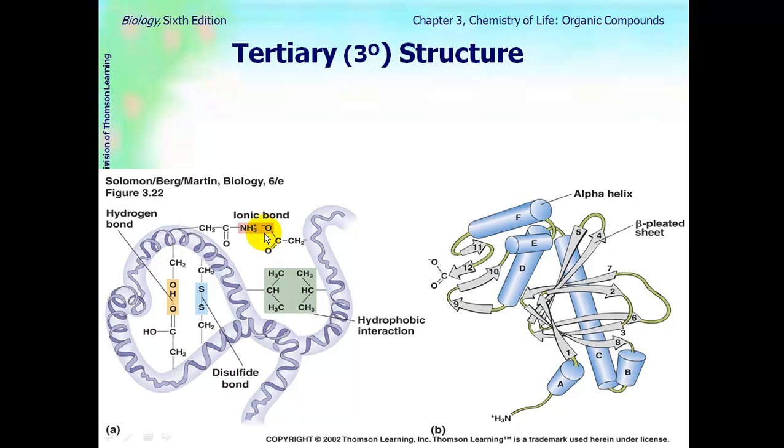Tertiary structure, you have more than different kinds of interactions occurring. You have ionic bonds occurring between positive and negative ions. You have hydrogen bonding still occurring. You have disulfide bonds, which are bonds between sulfur groups. And you have hydrophobic interactions, so you've got some repelling going on. And because of this, the protein is all in a 3D shape.